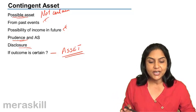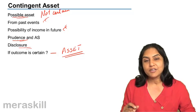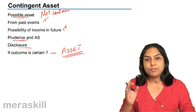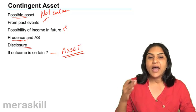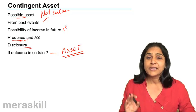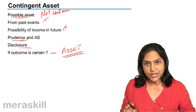So what is a contingent asset? A contingent asset is an asset which may arise in future. It is a possible asset, a probable asset, an asset which may or may not arise on the happening or non-happening of some future event. There could be possibility of an income in future, but we are not certain.